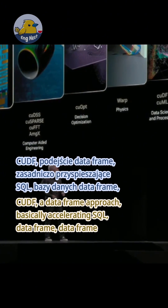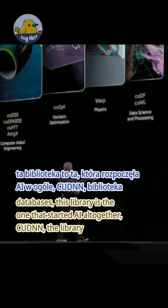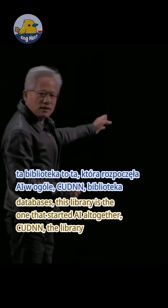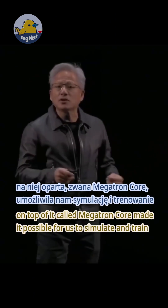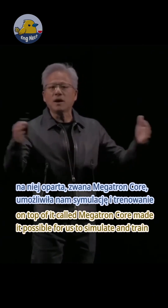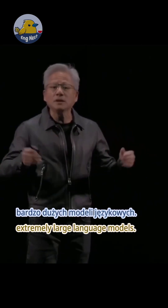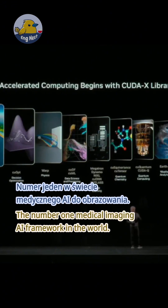A Python solver for CUDA for simulation. cuDF: a data frame approach, basically accelerating SQL data frame databases. This library is the one that started AI altogether. cuDNN — and the library on top of it called Megatron Core — made it possible for us to simulate and train extremely large language models.